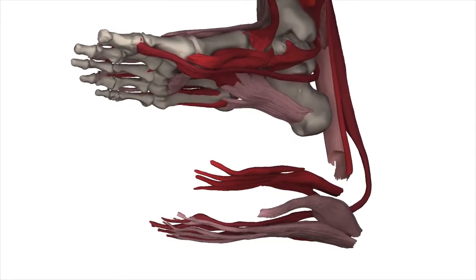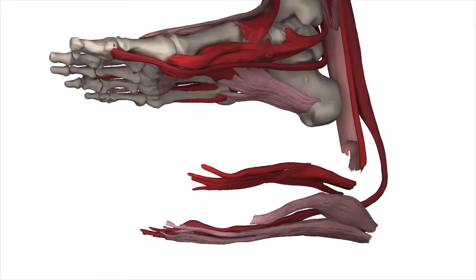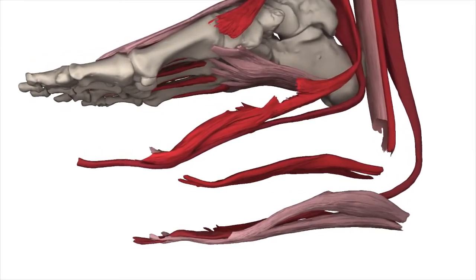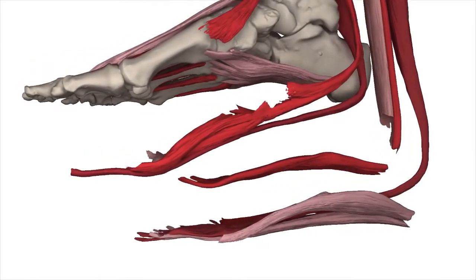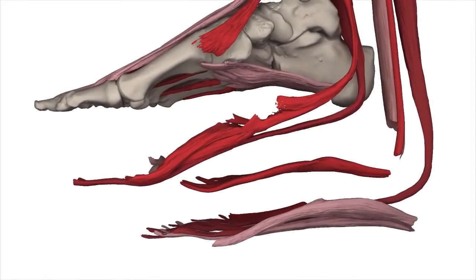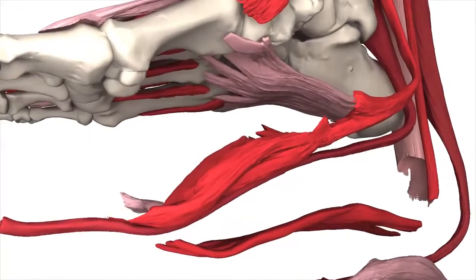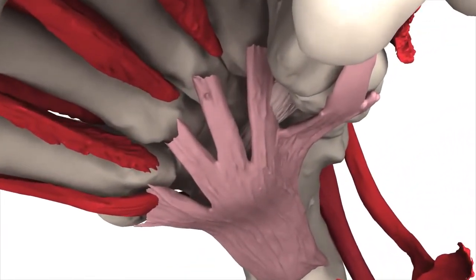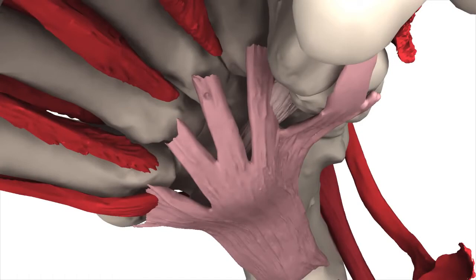The lumbricales are four small muscles which flex the proximal phalanges of the four small toes. The third layer consists of the flexor hallucis brevis, which flexes the proximal phalanges of the big toe; the adductor hallucis, which adducts the big toe; and the flexor digiti minimi brevis, which flexes the proximal phalanx of the fifth phalanges. The fourth layer contains seven muscles in two groups: four interossei dorsalis between the metatarsal bones, which abduct the toes away from the axis of the second toe, flexing the proximal and extending the distal phalanges; and three interossei plantares beneath the third, fourth, and fifth metatarsals, which adduct the three toes toward the axis of the second toe, flexing the proximal and extending the distal phalanges.